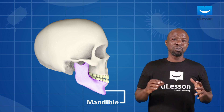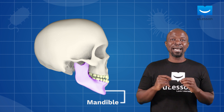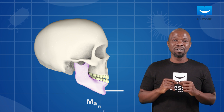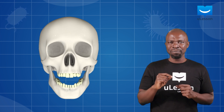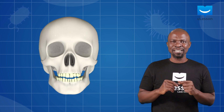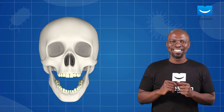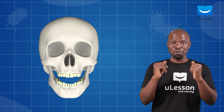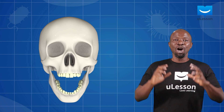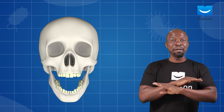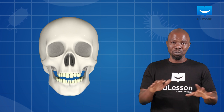The mandible is the only part of the skull that can move. Try and move your lower jaw so you can see this happen. Did you feel it move? Cool. Other parts of the skull are immobile — they cannot move.